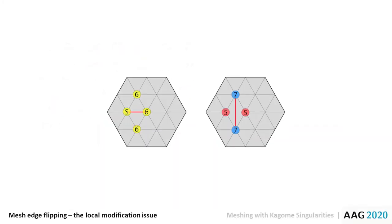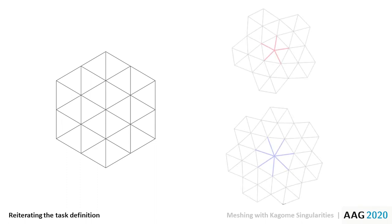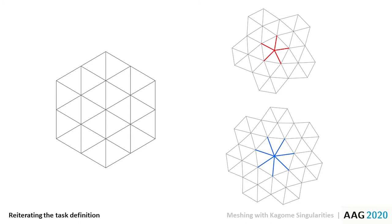Let us now look at the mesh topology adjustment scheme. To accomplish topological adjustment within a given regular mesh, we employ the local mesh operation of edge flipping. However, as can be seen in this image, the flipping of an edge produces collateral and unwanted valence changes to linked vertices. Remembering our task definition, our aim is to introduce a single valence change at a specific vertex without surrounding adjustments.